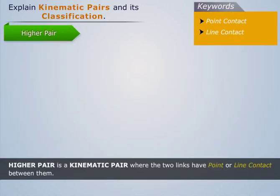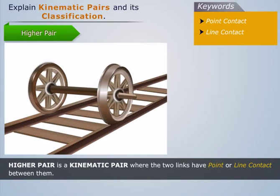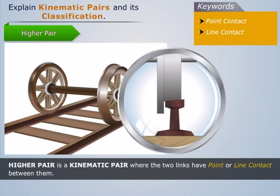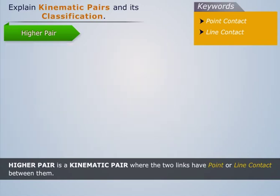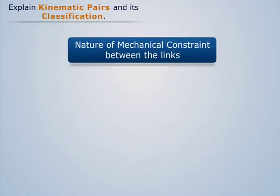Note that the contact surfaces of the two links are of similar shapes. A higher pair is a kinematic pair where the two links have point or line contact between them. For example, a rail wagon wheel, where the wheel and rail track have a line contact between them. Ball and roller bearings are some other examples of higher pairs.